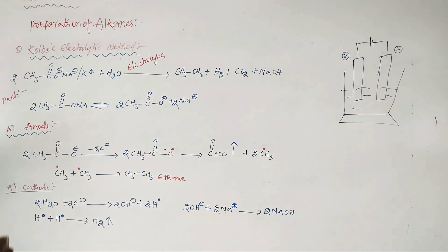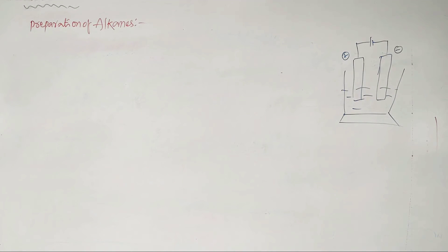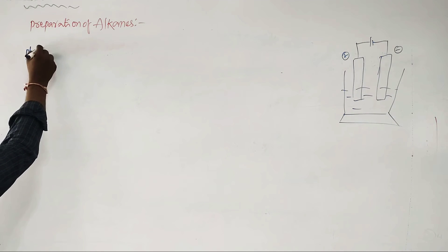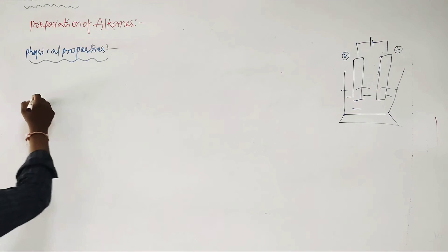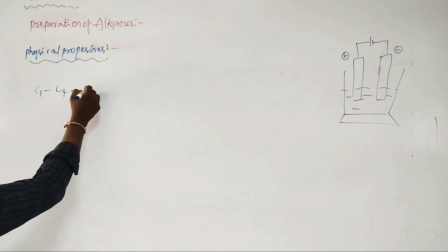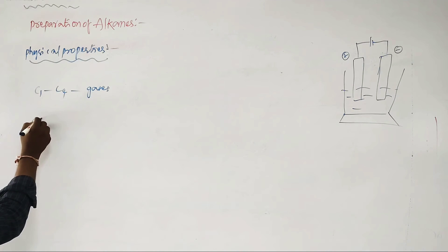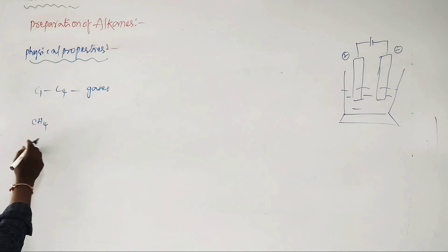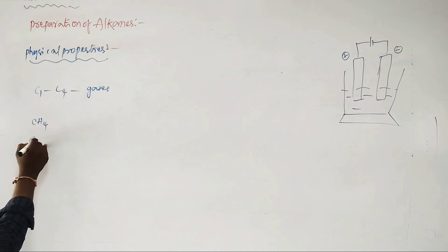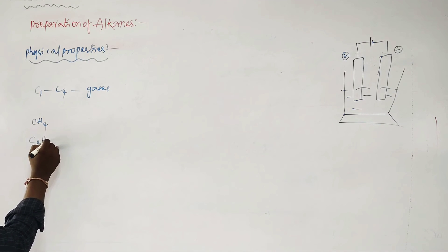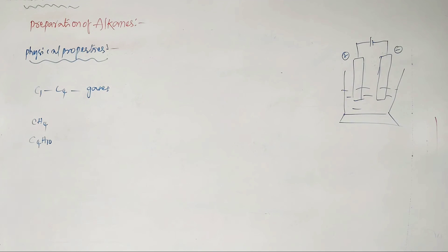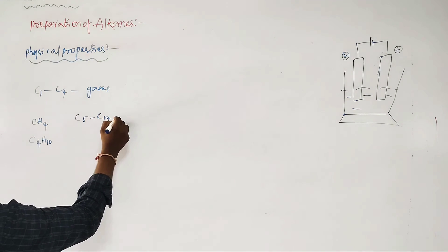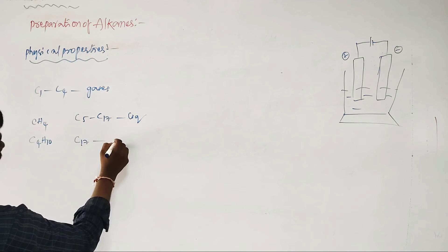Physical properties of alkanes: from C1 to C4, all are gases — for example, methane (CH4) is gobar gas and butane (C4H10) is LPG gas. From C5 to C17, alkanes are liquids. Above C17, alkanes are solids. As molecular mass increases, the boiling point increases.